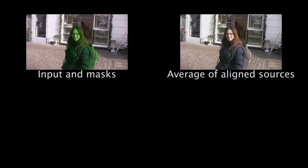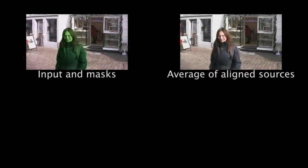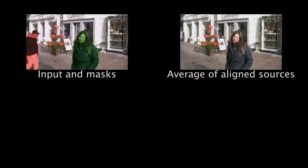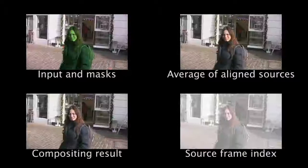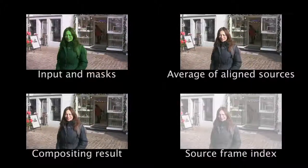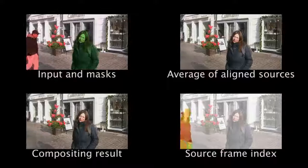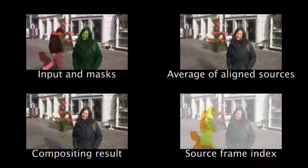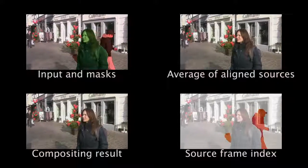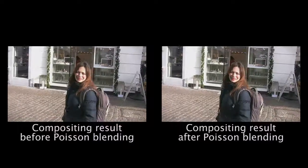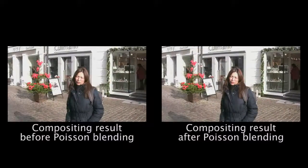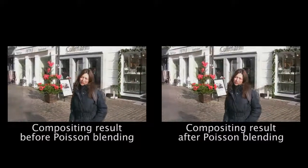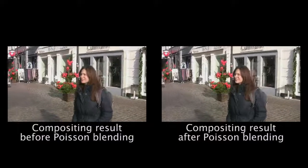We use the average of the aligned sources as a guide to compute the in-painted result. This in-painting is computed as a composite of aligned regions that are in good agreement with each other and in good agreement with the boundary of the hole. In the last step, we perform gradient domain fusion using Poisson blending for removing the illumination differences between different sources.